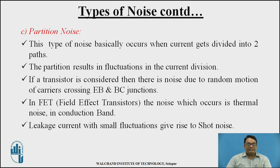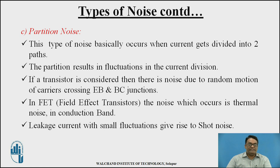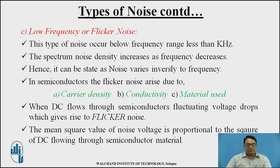Partition noise occurs when current gets divided into two parts. The partition of current results in fluctuations of the total current. In a transistor, noise arises due to random motion of carriers crossing from the emitter-base to the emitter-collector junctions. In a FET, noise occurs as thermal noise in the conduction channel, while leakage current produces small fluctuations giving rise to shot noise.